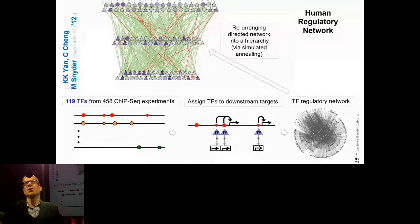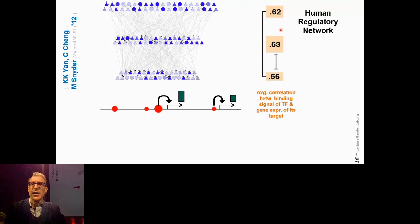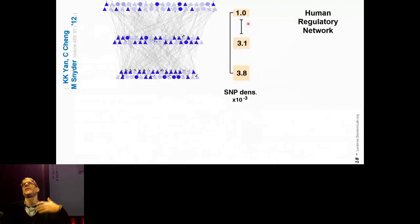We were very interested because we could take these regulatory networks and unfold them into hierarchies, with TFs that tended to do more regulation at the top with higher out-degree, and ones that were more regulated at the bottom. Here's just the transcription factors in the human network — about a hundred or so factors from circa 2010 — and it made a nice hierarchy. The factors at the top tended to drive gene expression more strongly, were better connected into other networks like the protein interaction network, and were more conserved with fewer human variants.